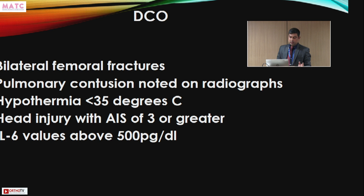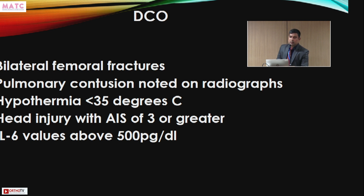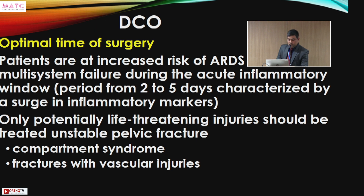Additional parameters include patient hypothermia, elevated temperature, head injury with an Abbreviated Injury Scale score of 3 or greater, and interleukin values — though IL levels are not routinely measured. Literature states that if IL values are above the threshold, Early Total Care should not be performed; Damage Control Orthopedics should be planned instead.